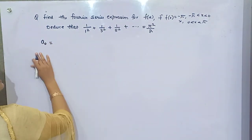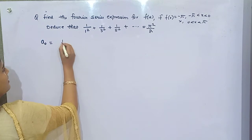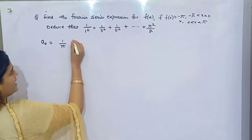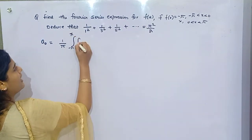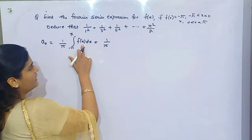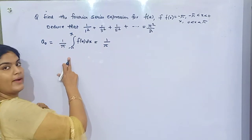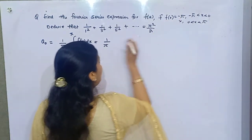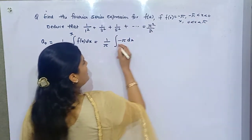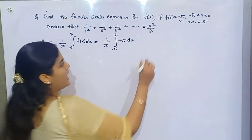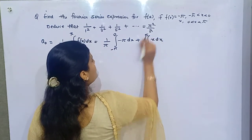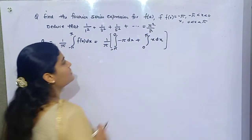First of all, what you need to find out is A₀. Usually, the formula for A₀ is 1/π times the integral from minus pi to pi of f(x) dx. But here, f(x) is not a single function over minus pi to pi — it is minus pi dx if the interval is from minus pi to 0, and it is x if the interval is from 0 to pi. This is the slight difference between continuous and discontinuous intervals.